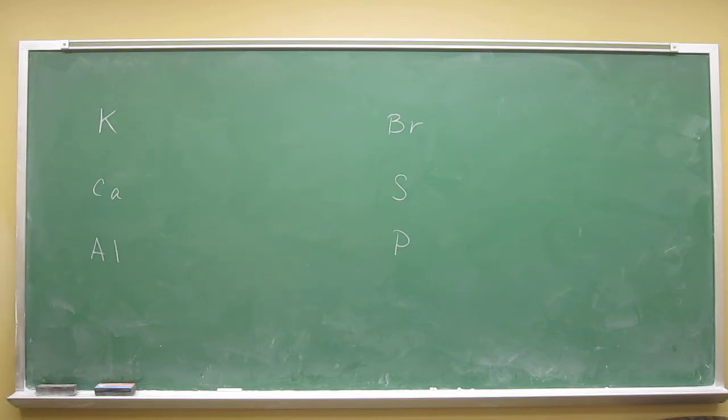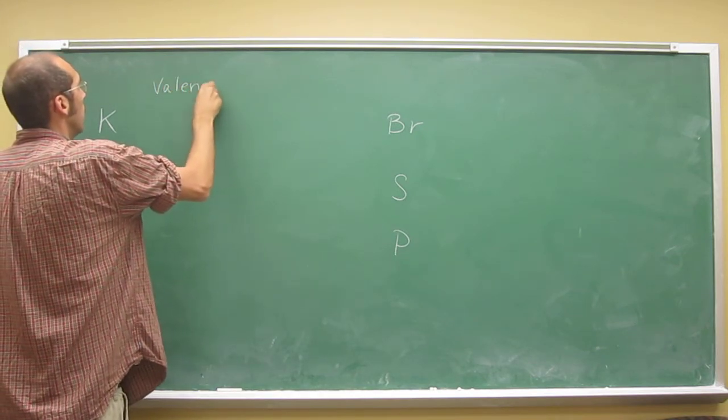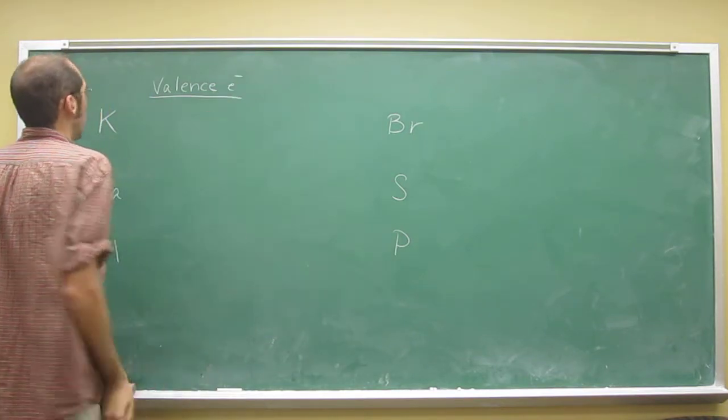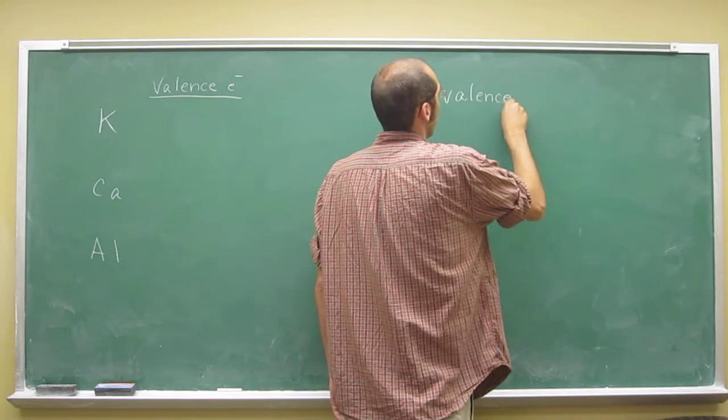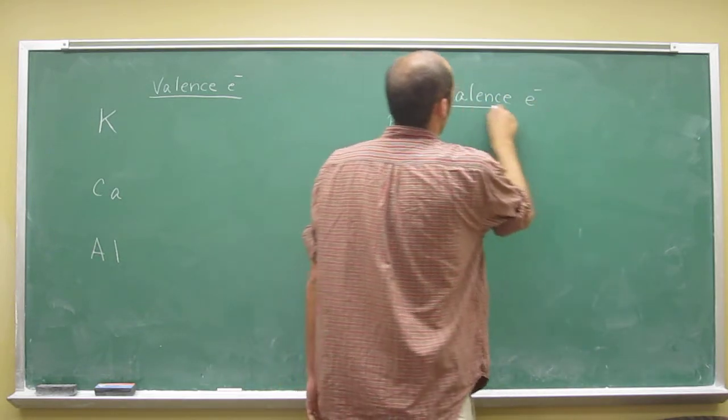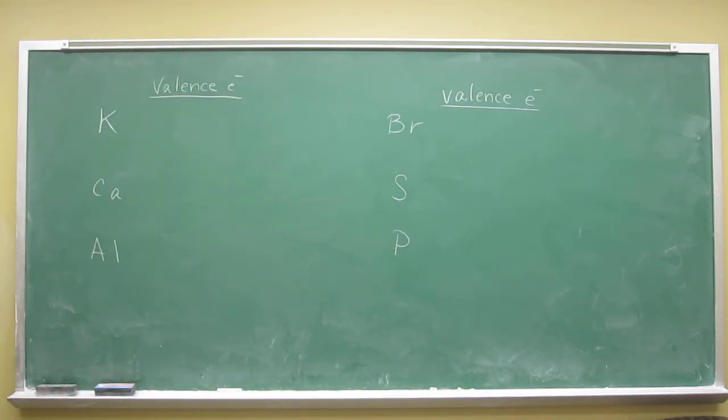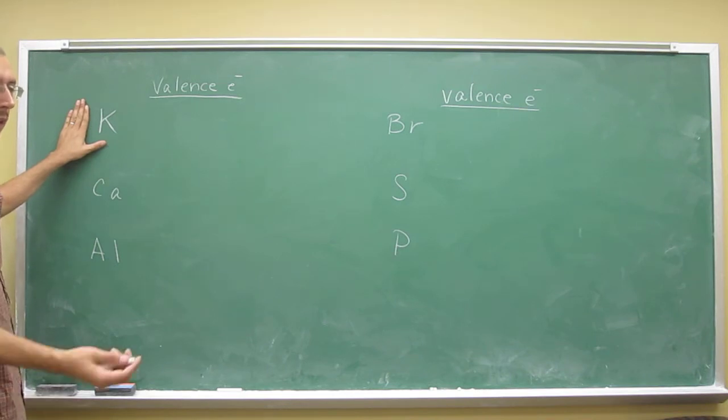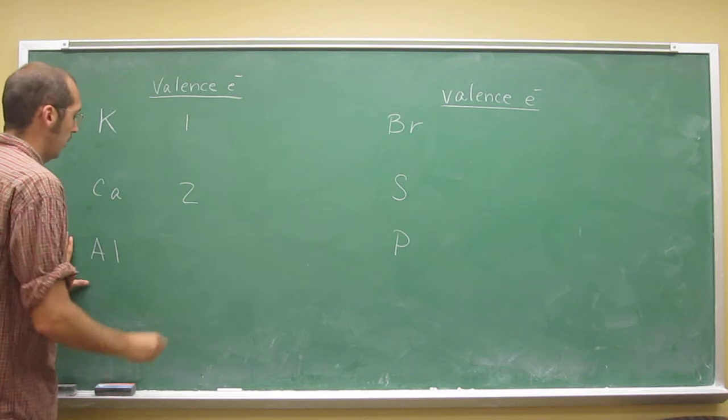So you look at the number of valence electrons each of these has, so let's just do that. And then see if it would be easier for the particular atom to get to eight or zero. So how many valence electrons does potassium have? Well, one, right? Calcium's got two. Aluminum's got three.